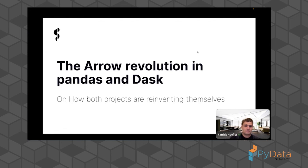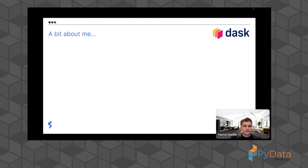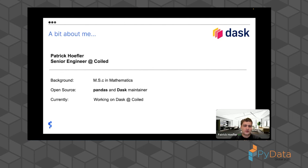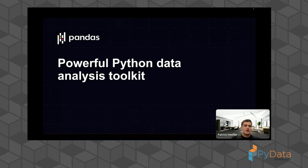We will learn a little bit about how the Apache Arrow project is changing pandas and dask for the better. I'm a Coiled engineer where we deploy dask for our customers, and my main responsibility is improving dask and pandas — it's nice to be able to work on open source almost full time.